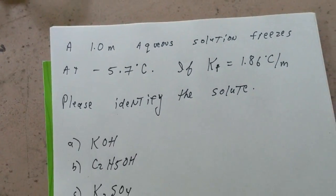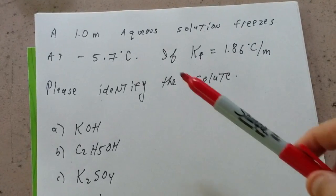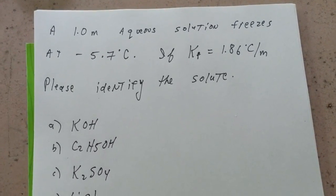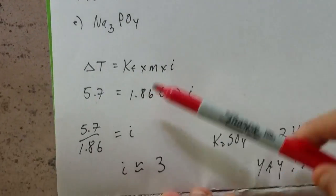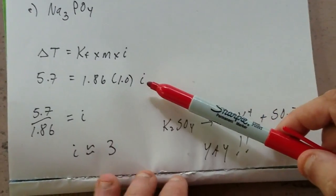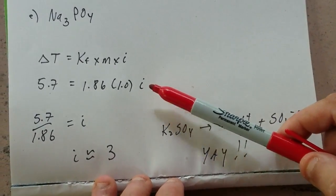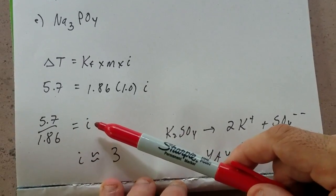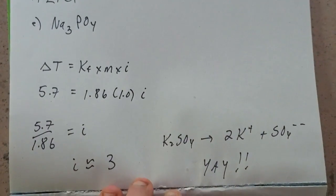So we're going to plug it in. We know that the freezing point of water is zero, and here it goes down to negative 5.7. So the change is 5.7 degrees. The KF is given as 1.86. The molal is 1.0, and i is the unknown. Dividing 5.7 over 1.86 gives i approximately equal to 3.